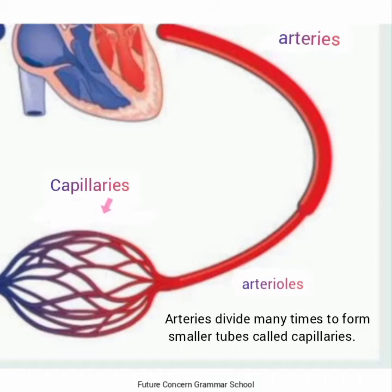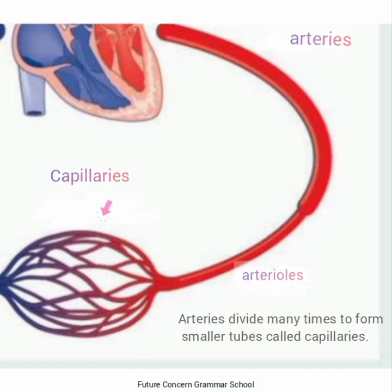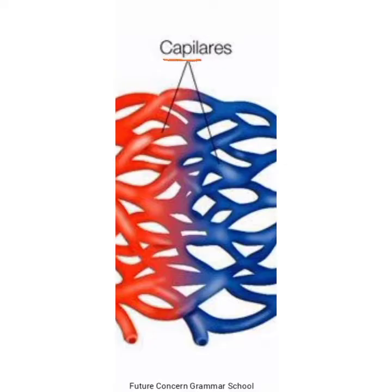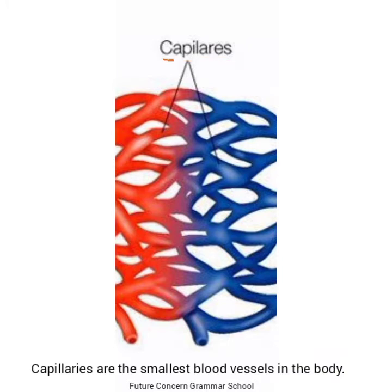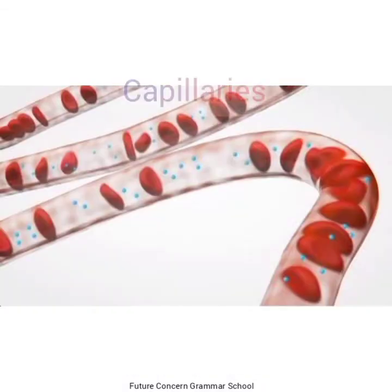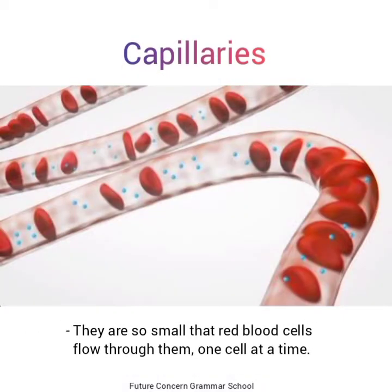Arteries divide many times to form smaller tubes called capillaries — arteries تقسیم ہو کر چھوٹی نالیاں بناتی ہیں جنہیں capillaries کہتے ہیں۔ Capillaries are the smallest blood vessels in the body — capillaries جسم میں سب سے چھوٹی blood vessels ہیں۔